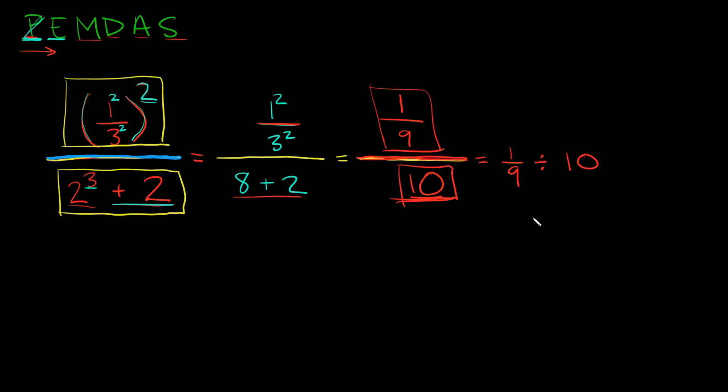So here I have a fraction one ninth divided by a whole number ten. So how do you solve that? Well the first thing you have to do is change that whole number into a fraction. So how do you turn a whole number into a fraction? All you have to do is put it over one.